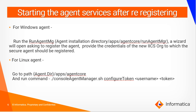For a Windows agent, you can run the agent manager, available under the secure agent installation directory at apps, agent code, run agent manager. This is a wizard that will open asking to register the agent. Provide the credentials of the new IACS org to which the secure agent should be registered. You may need to copy the token by logging in to your new IACS org.